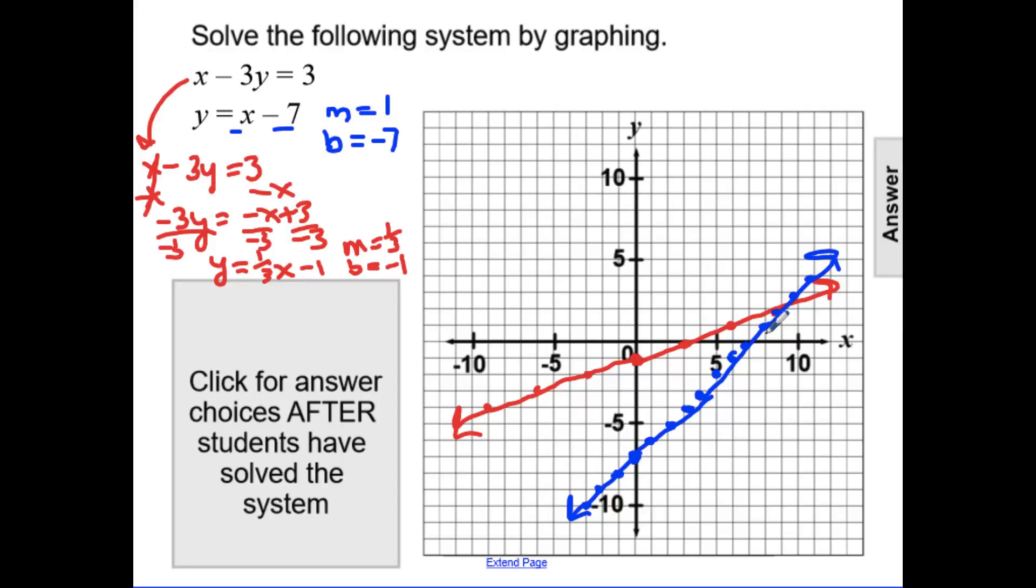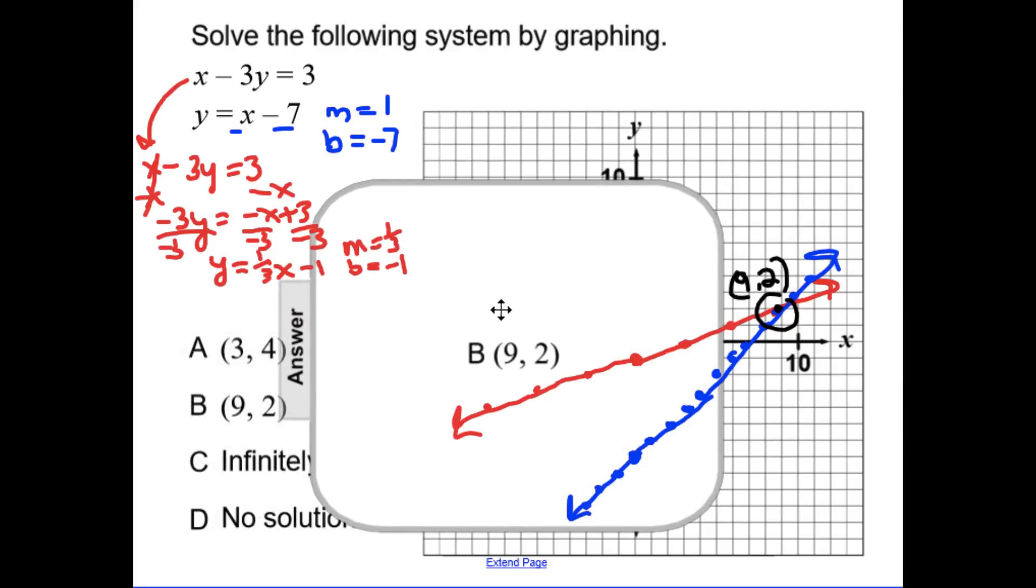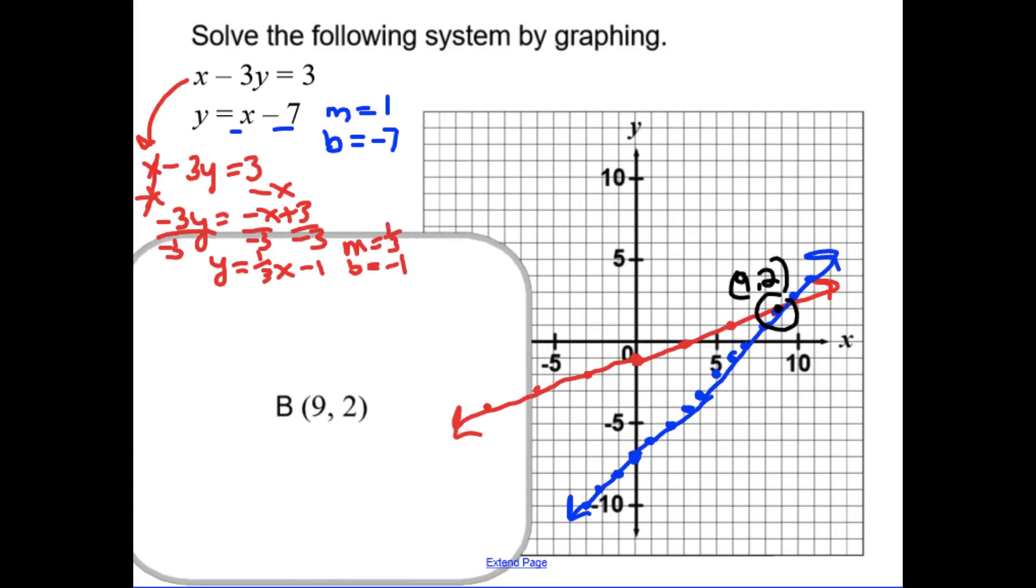The two lines intersect at the point 9, 2, this point here. Looking at our answer choices, that makes our solution B, the point of intersection 9, 2.